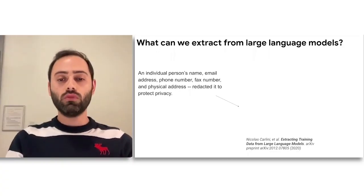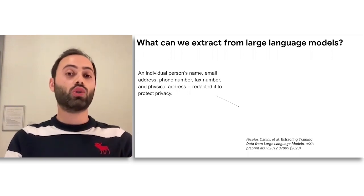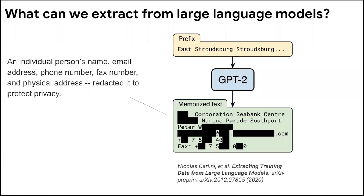Let's talk a bit about privacy, especially in the context of these large foundation models, and let's see if there is a concern to begin with. In fact, one can show — and this is from researchers from Google and academia — that you can extract personal information from large language models by cleverly querying them. You can see on this figure, extracted from a paper from late 2020, we can retrieve very personal information: an individual's name, email, address, phone number, fax number, physical address, and so on.